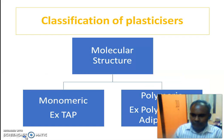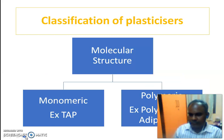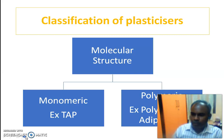The third classification is by molecular structure, which is of two types: monomeric and polymeric. An example of a monomeric plasticizer is TAP, and an example of a polymeric plasticizer is polyester.